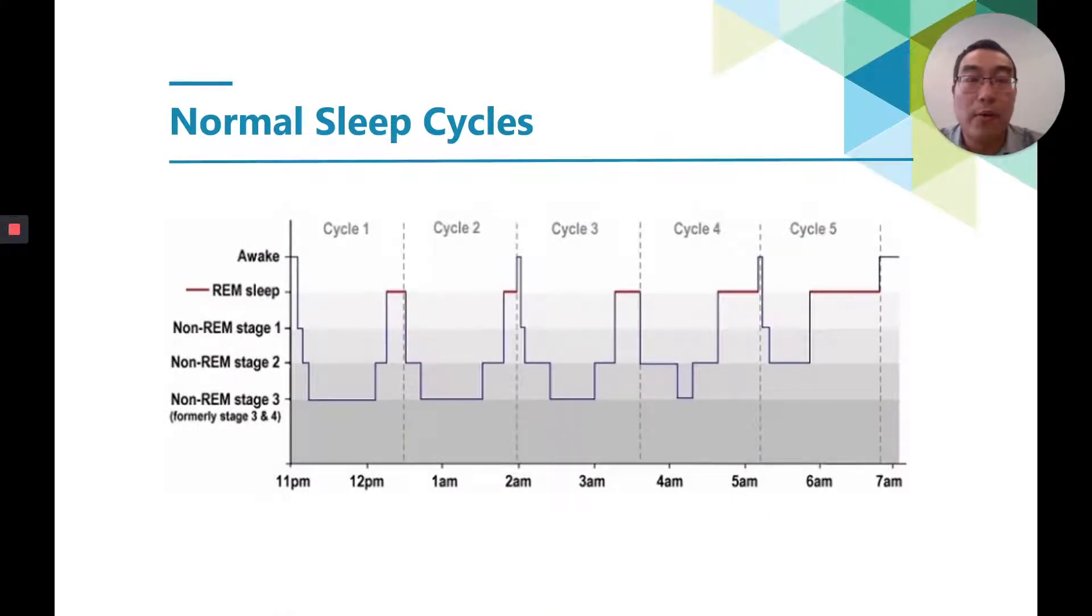A typical night sleep of a young, healthy adult consists of four to five sleep cycles. In each sleep cycle, the sleep stages go through non-rapid eye movement, as we normally call it non-REM sleep, REM sleep, and sometimes awake, although we may not realize we wake up during sleep.